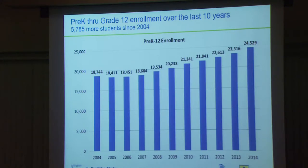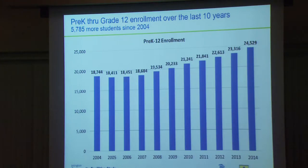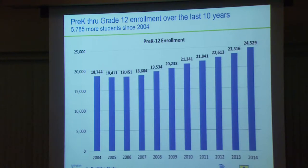Here's our total enrollment over the past decade. In 2004, we had nearly 19,000 students. As of September 30th — the term we use is our official count — each year on September 30th the school system pulls a snapshot of how many students are enrolled, and we use that number year-round. This year, 2014, our official count was 24,529 — growth of almost 5,800 students over the past decade.